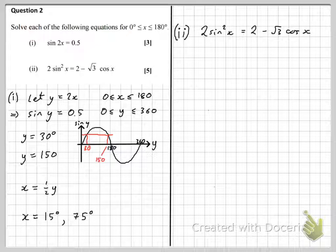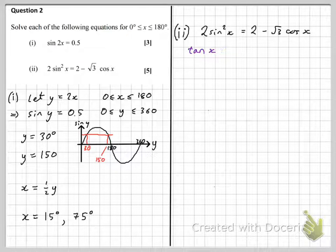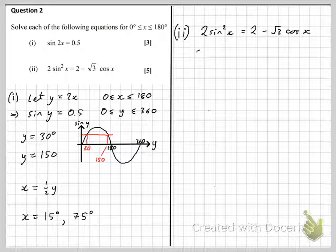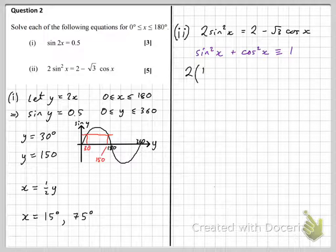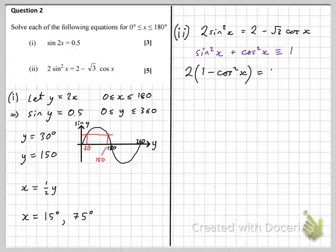Now, we've got two identities that we can use. There's the tan x one. We know that tan x is equivalent to sine x over cos x. But if you look carefully, that's not going to be useful in this identity, because it's not going to be able to eliminate anything. Whereas our other identity, sine squared x plus cos squared x equals 1, we can use straight away. So we can replace our sine squared x with 1 minus cos squared x.